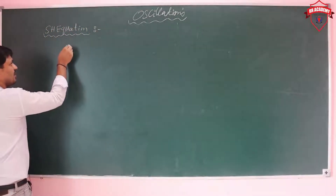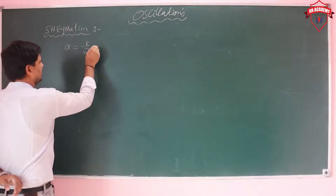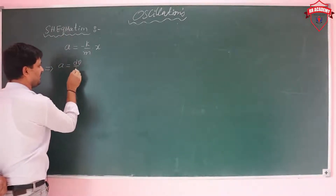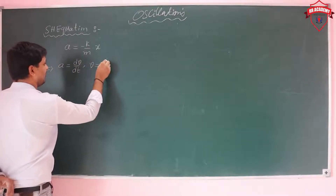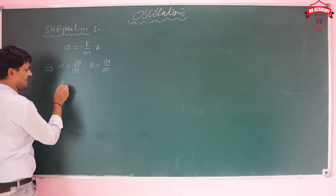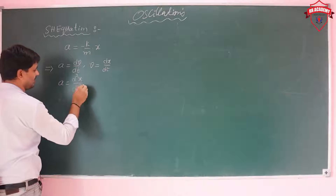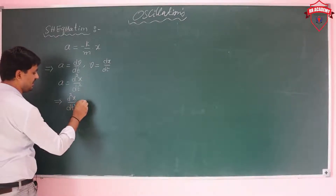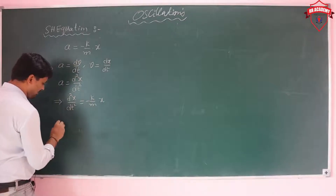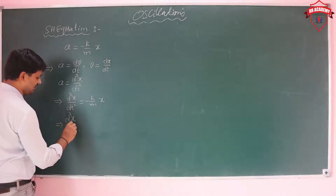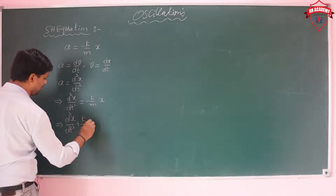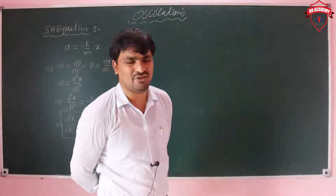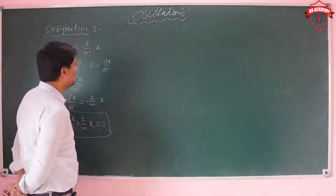From the acceleration expression a = -(k/m)*x, since a = d²x/dt², we can write the simple harmonic equation as: d²x/dt² + (k/m)*x = 0. This is called the simple harmonic equation.